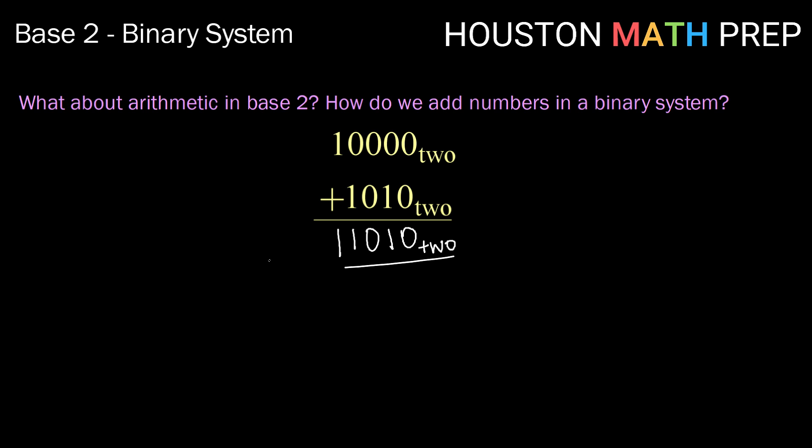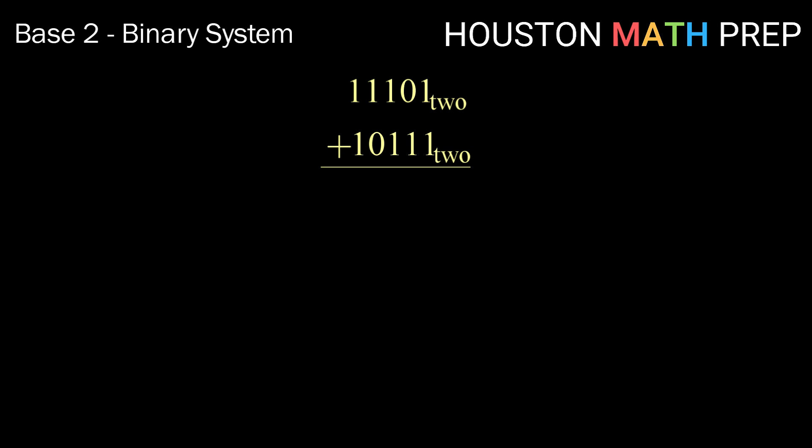Let's look at what happens when we have more than just aligned 1s and 0s. In this problem, right from the start, 1 plus 1 is 2. Since 2 is not a digit in binary, we think of 1 plus 1 as 0 ones and carry a group of 2. Then 1 plus 1, again, is 2, so we keep 0 ones and carry a group of 2.